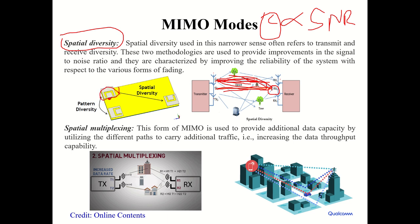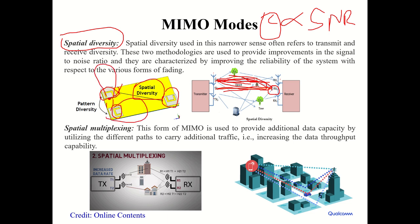From an antenna design perspective, spatial diversity can be achieved in two ways. First, by placing one antenna here and another there with sufficient spatial separation to ensure isolation — called spatial diversity. Second, by placing two antennas very close together but ensuring pattern diversity, where one antenna radiates in one direction and the other in a different direction. Both approaches achieve good diversity performance.